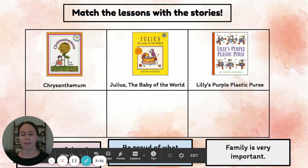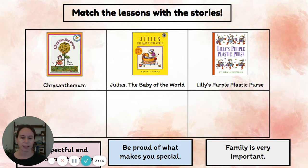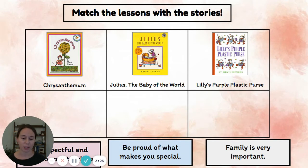Here's what your assignment today looks like. You'll get a chart like this. At the top it says to match the lessons with the stories. I see three stories on our chart: Chrysanthemum, Julius the Baby of the World, and Lilly's Purple Plastic Purse. At the bottom of the chart are three different lessons: be respectful and nice to your teachers, be proud of what makes you special, and family is very important.